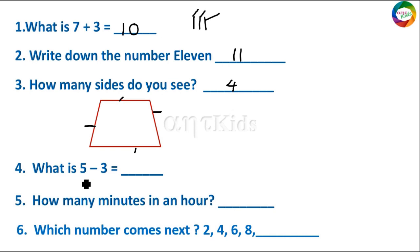What is 5 minus 3? You have 5 lines here. So you have to cross 3 lines. 1, 2, 3. What is balance? 2. So 5 minus 3 is 2.